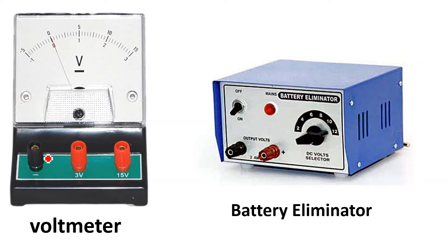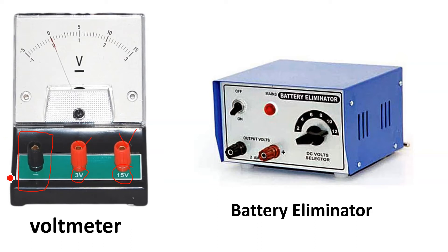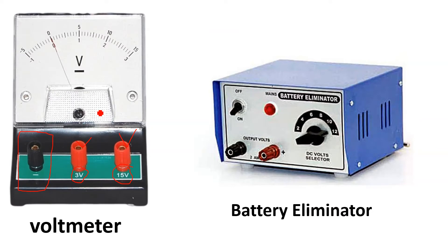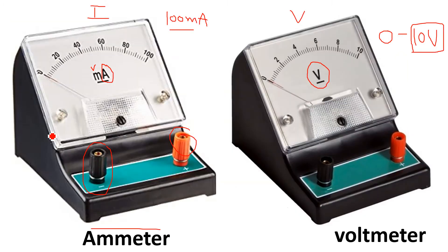There is also another type of voltmeter with 3 terminals, where the negative terminal is common. One positive terminal is labeled 3 volts and another is labeled 15 volts. If your experiment's range is 0 to 3 volts, use the 3V terminal. If you need to measure up to 12 or 15 volts, use the 15V terminal. Similarly, a variable ammeter also has 3 terminals for changing the range. These terminals are used to change the measuring range of the instrument.